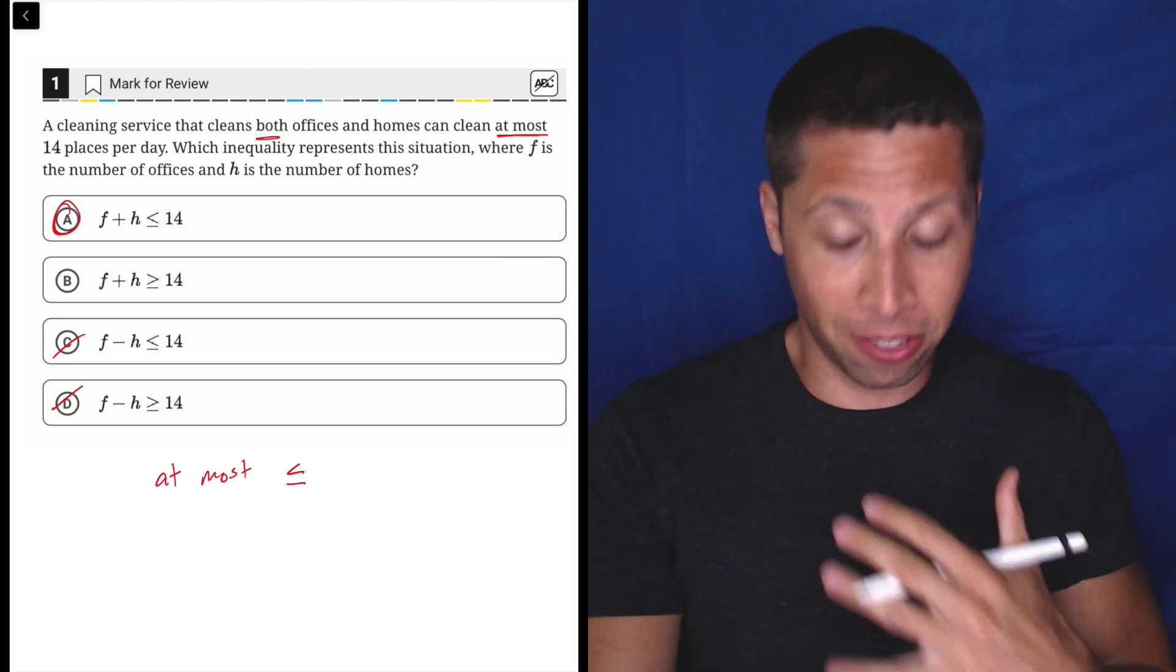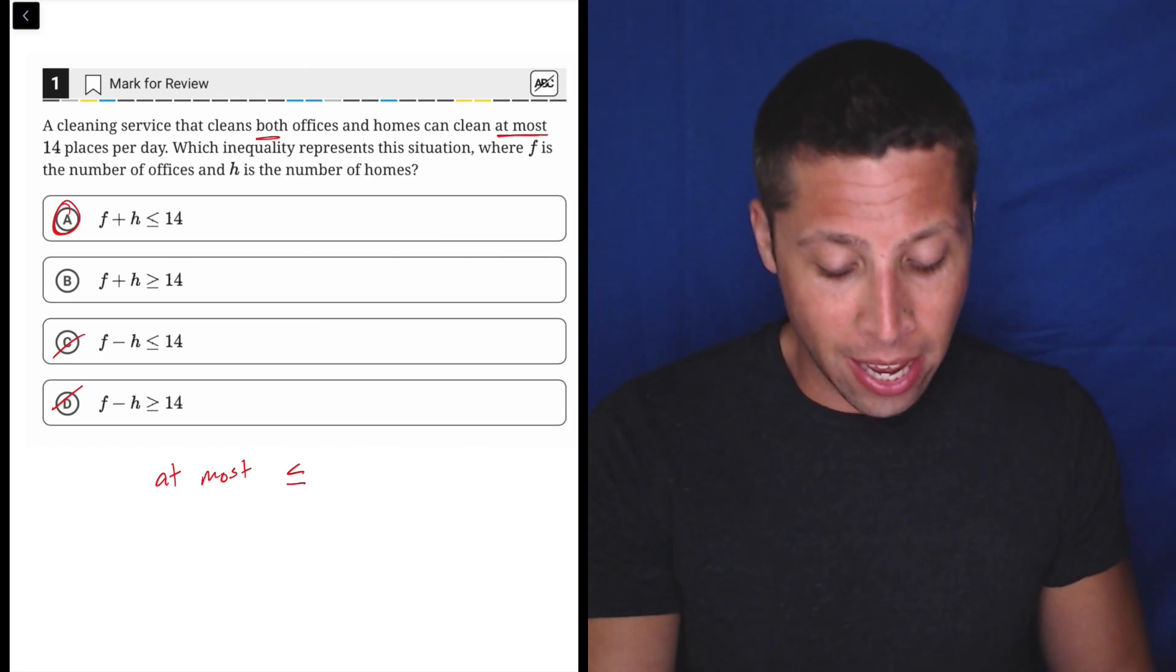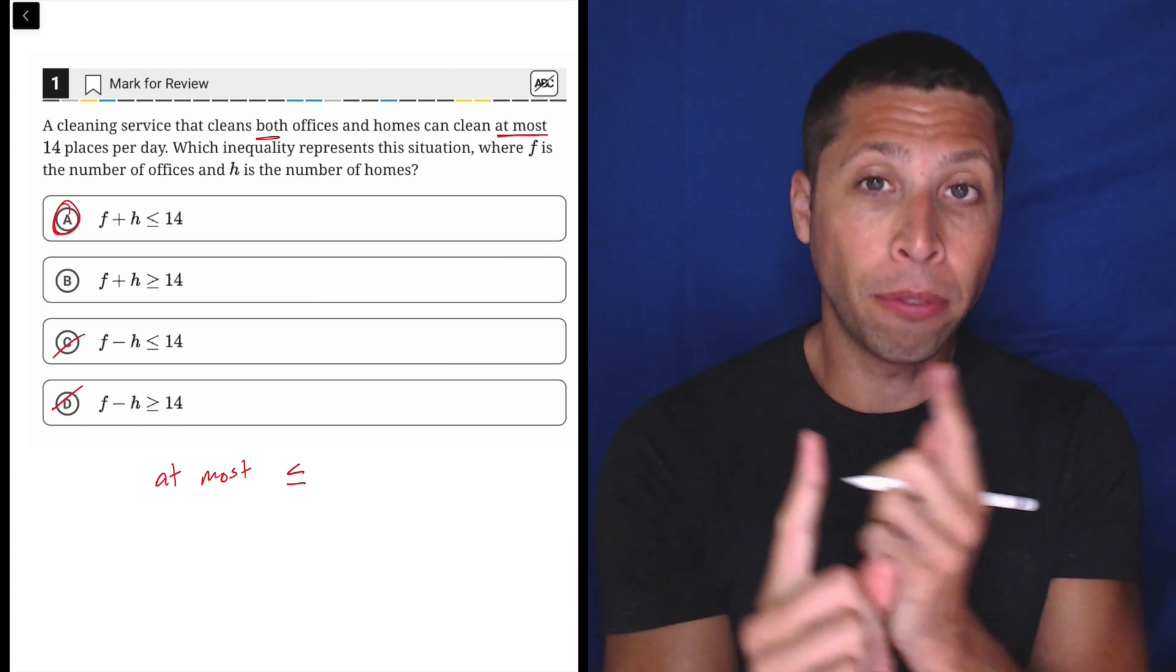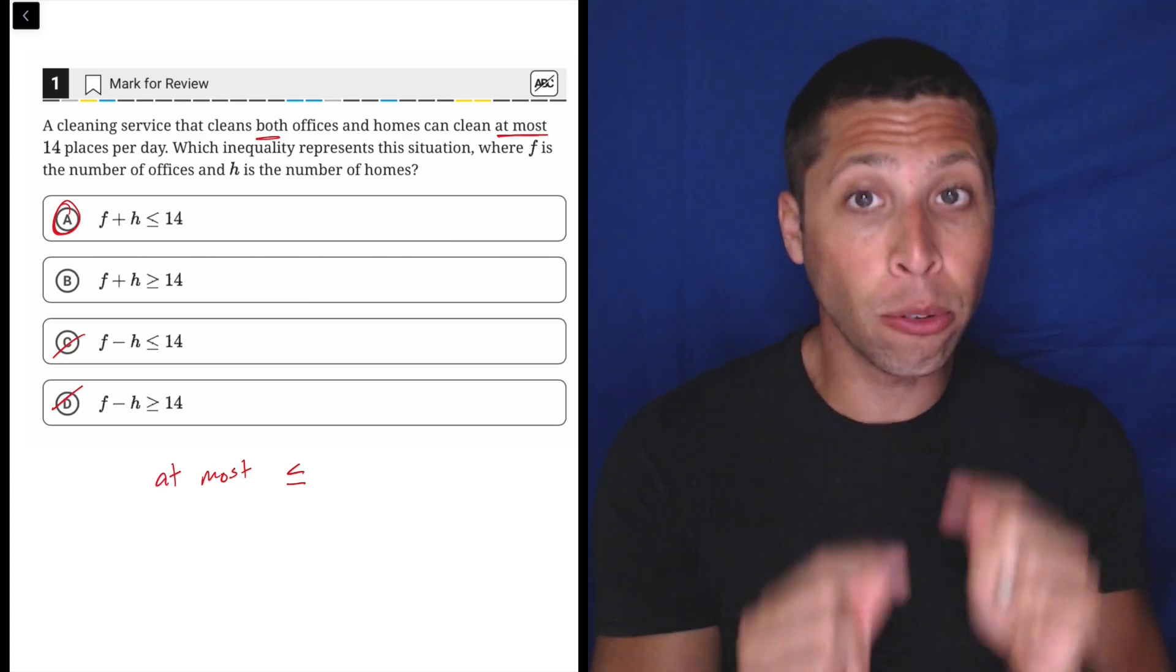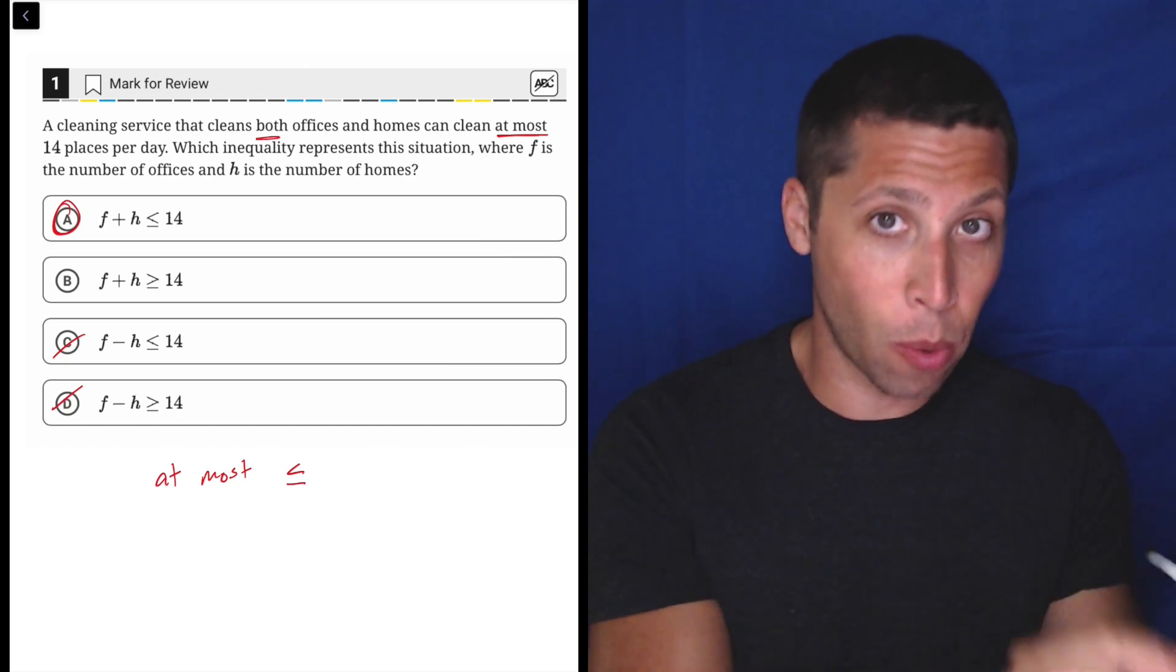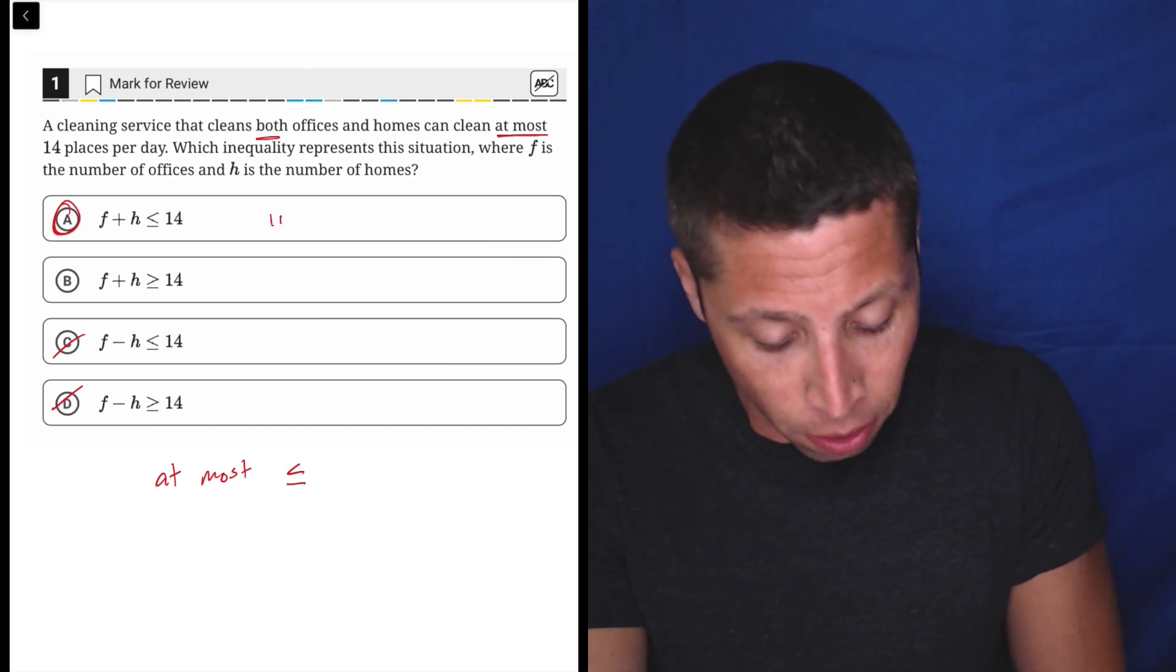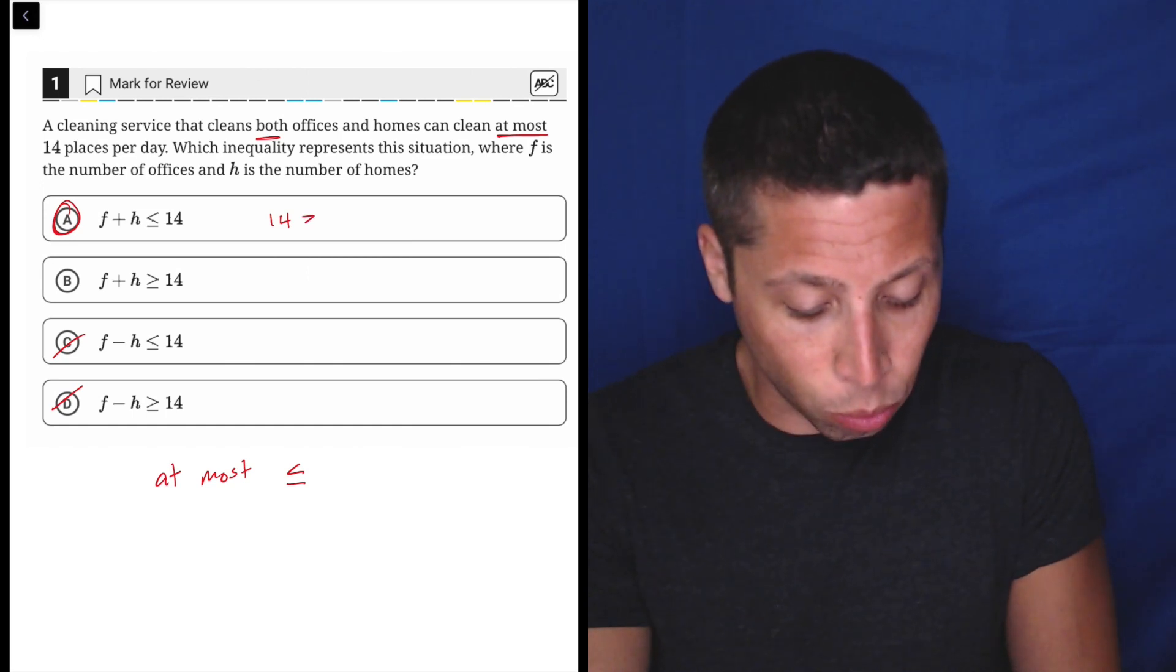Now, I should point out, just since we're on this question, that the SAT could have easily just made this question a little harder by reversing the inequality without changing the language of the question. So another valid answer to this could have been 14 is greater than or equal to F plus H.